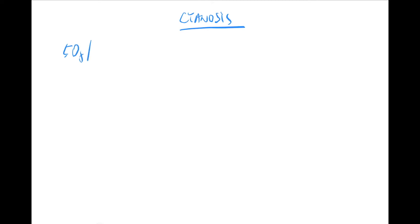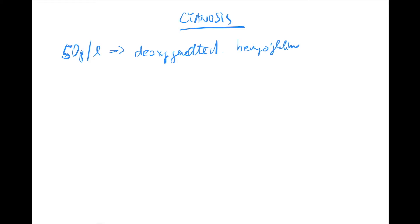What matters most is the cause of the dark appearance of the blood. The blood is really dark, and what makes it dark are increased levels of deoxygenated hemoglobin, also called reduced hemoglobin. There's a cutoff: the concentration that makes the blood dark is 50 grams per liter or more of deoxygenated hemoglobin.